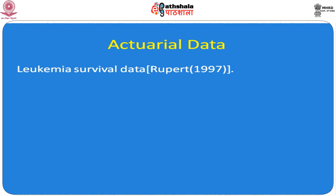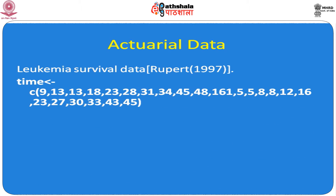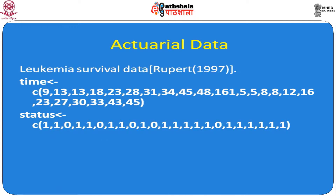Here we start with an introduction. This is a leukemia survival dataset taken from Rosold's book, published in 1997. The first variable is time — for each patient, times are recorded as 9 months, 13 months, 13 months, 13 months, 18 months, and so on. The second variable is status: 1, 1, 1, 0, 1, 1, 0, 1, 1, 0, and so on.